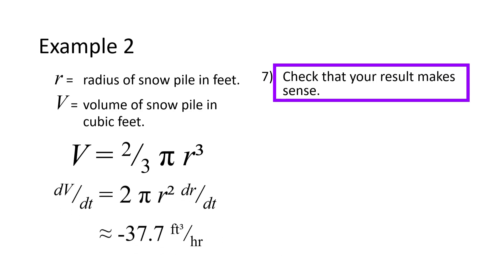Next, we check whether our result makes sense. We have already noted that we have the correct sign, which is encouraging. What about the magnitude? The melting process takes more snow per hour from a larger pile than from a smaller pile, so the rate at which the volume decreases will gradually slow down as the pile shrinks.